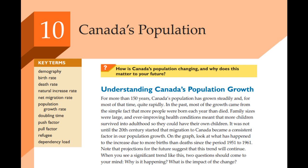All these immigrants coming to Canada had different reasons for moving. You've got push factors and pull factors. Push factors are the things that push people out of their home countries — things like famine, war, or a lack of opportunity. A great example is the Irish potato famine back in the 1840s. Imagine your main source of food just gone — people had to leave. Many Irish families ended up coming to Canada seeking refuge and new opportunities.